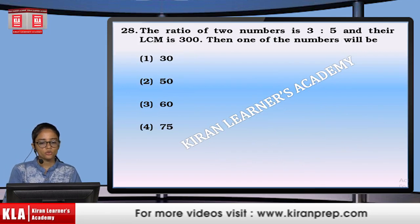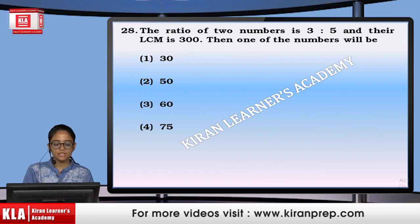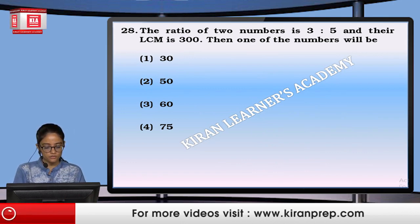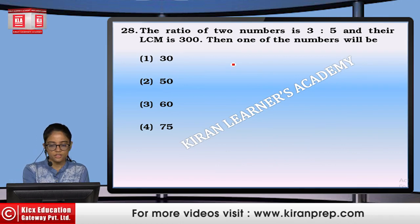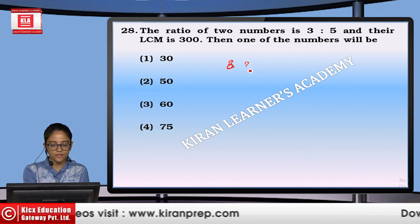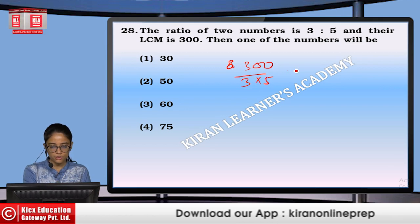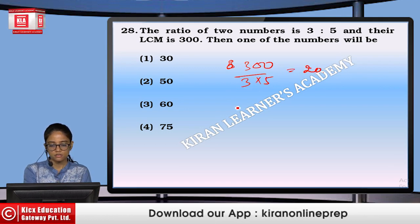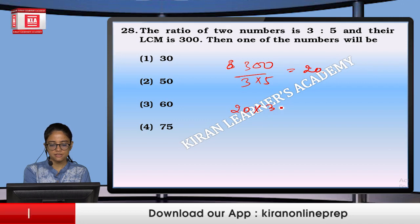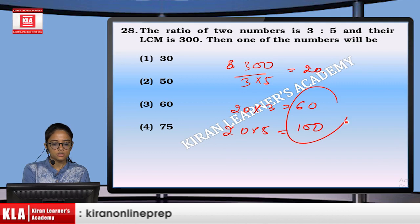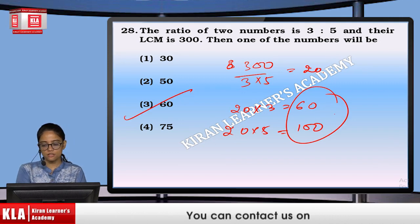The ratio of two numbers is 3 to 5, and their LCM is 300. One of the numbers can be calculated as 300 ÷ (3 × 5) = 20. So 20 × 3 = 60 and 20 × 5 = 100. One of the numbers is 60. That is option number 3.